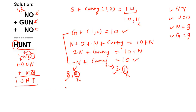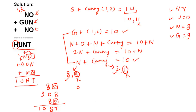We haven't found all digits yet. Rewriting with known values: 8O + 908 + 8O = 10NT. Now looking at the units column: O + 8 + O gives T with a carry of 2 upward (since we established carry = 2). So we have 2O + 8 = 20 + T, which simplifies to 2O = 12 + T.